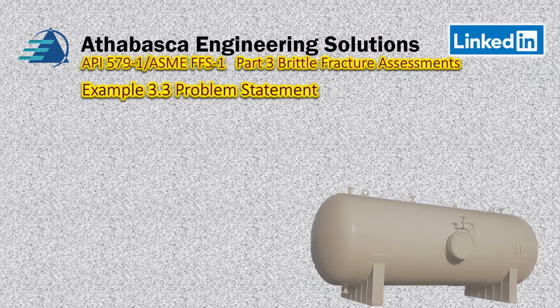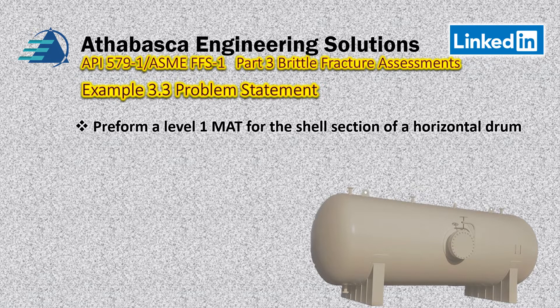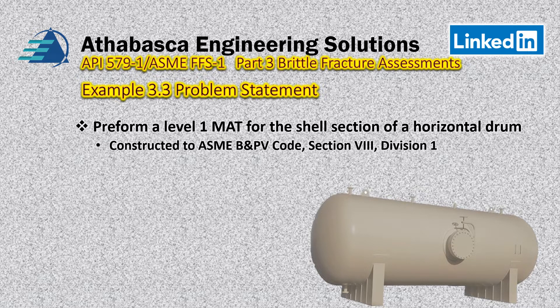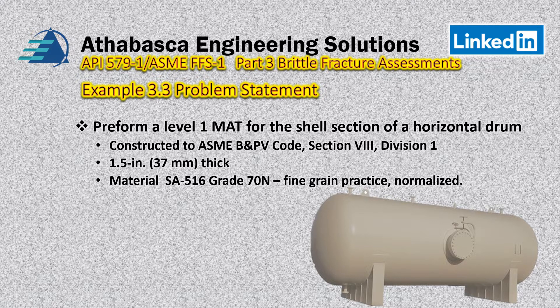In this particular example, we're going to be looking at a level one MAT, which is a minimum allowable temperature for this material. In particular, we're just going to look at the shell section, so we don't have to get into the issues of governing thickness because the governing thickness is the thickness of the shell. It's just for a horizontal drum, and it's constructed to ASME Section Eight Division One of the boiler pressure vessel code. It's one and a half inches thick, or 37 millimeters, and the material of construction is SA 516 Grade 70N, which is fine grain practice and it's normalized.